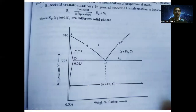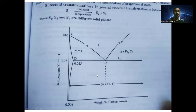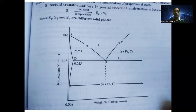The eutectoid transformation is denoted as S1 gives S2 plus S3 at constant temperature, where S1, S2, and S3 are different solids. On this diagram, the x-axis shows weight percentage of carbon and the y-axis shows temperature in degrees Celsius. The first solid S1 is austenite, the second solid is alpha ferrite, and the third solid is cementite. At point E, the eutectoid transformation occurs.